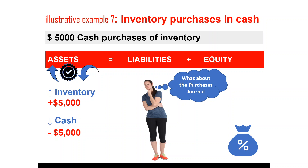You might have heard these terms before: FIFO, LIFO, weighted average cost methods. That is how to arrive at closing inventories and cost of sales. Don't worry, I'll be talking about everything in my upcoming tutorials.